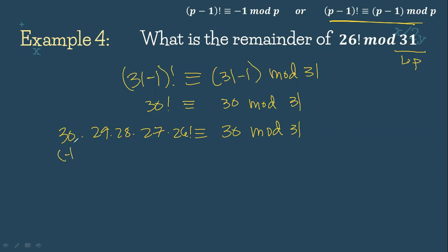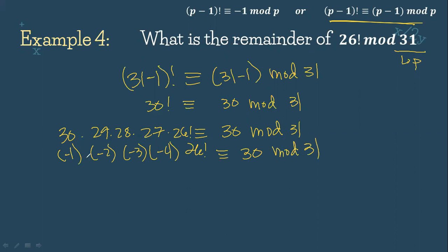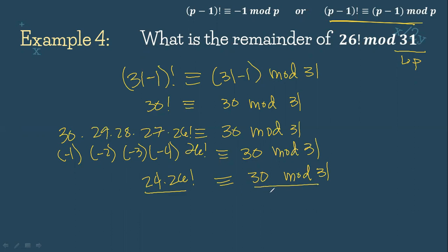So: 30 minus 31 is negative 1; 29 minus 31 is negative 2; 28 minus 31 is negative 3; 27 minus 31 is negative 4; 26 factorial is congruent to 30 mod 31. Negative 1 times negative 2 is 2; times negative 3 is negative 6; times negative 4 is 24. So 24 times 26 factorial is congruent to 30 mod 31. Since 24 and 30 are both divisible by 6, we divide both sides by 6, giving 4 times 26 factorial congruent to 5 mod 31.